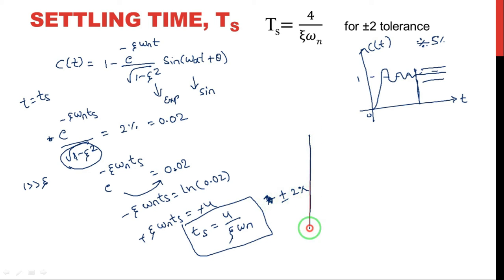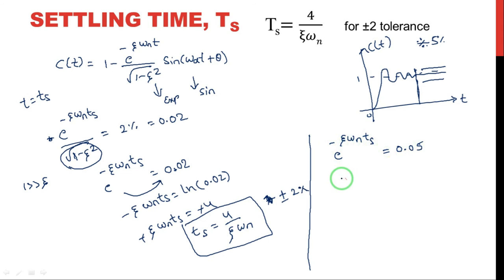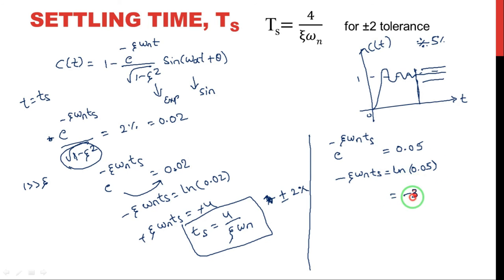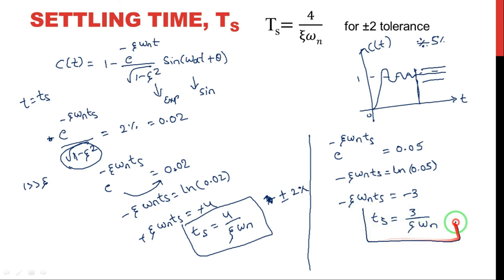If the tolerance is 5%, then e^(−ζωₙts) = 0.05. Again taking the natural logarithm: −ζωₙts = ln(0.05) = −3. The minus signs cancel, giving settling time ts = 3 / (ζωₙ) for 5% tolerance. Depending upon the tolerance band, we get different settling time values.